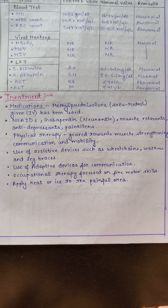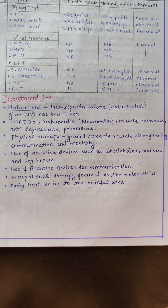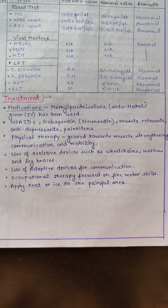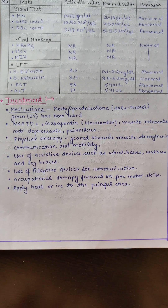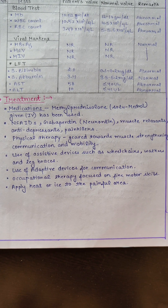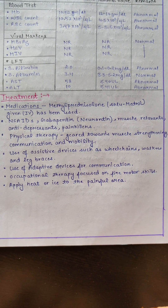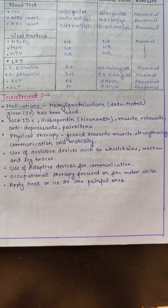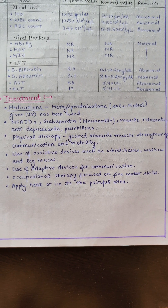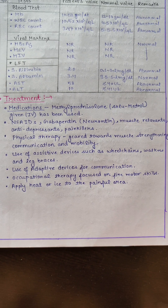For treatment: medications that could be given to the patient in acute spinal cord injury include methylprednisolone (the main medication, given IV), NSAIDs, Gabapentin, muscle relaxants, antidepressants, and painkillers. Physical therapy is geared towards muscle strengthening and mobility. The patient would be provided with assistive devices such as wheelchairs, walkers, and leg braces. Adaptive devices for communication are also used, and heat and ice are applied to the painful area.